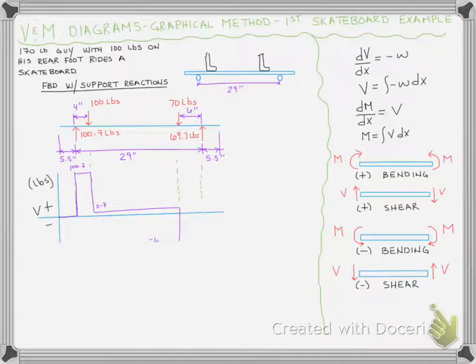We have no change in the load until we get to the wheel which then jumps us back up to zero because we jump up by our 69.7 pounds and we end up with three areas of shear which we can mark. I could call this area one, area two, and our negative area three.